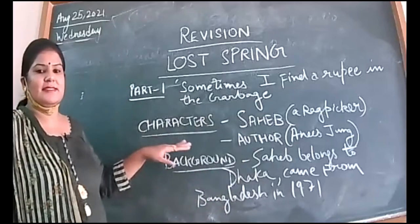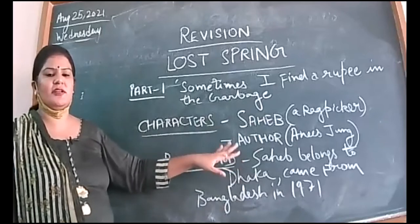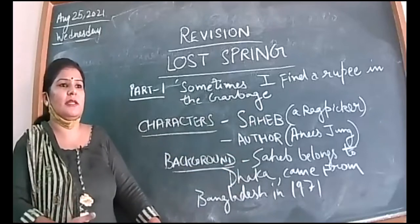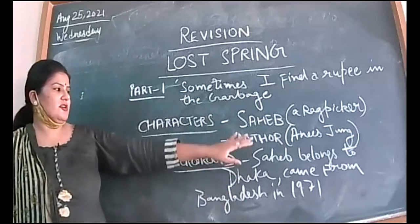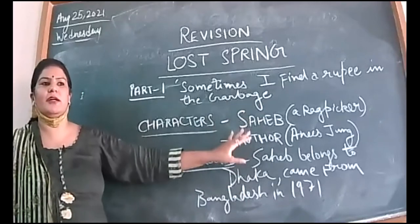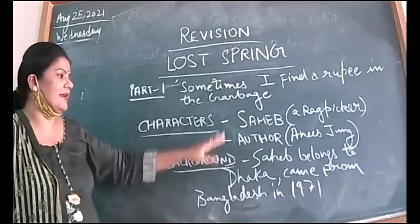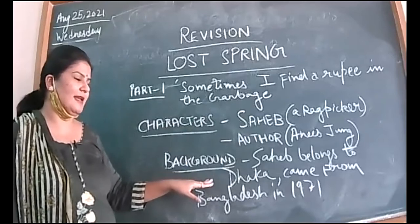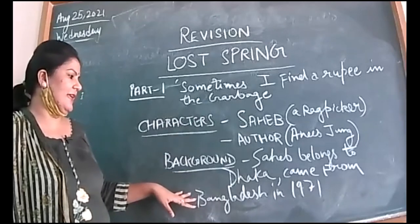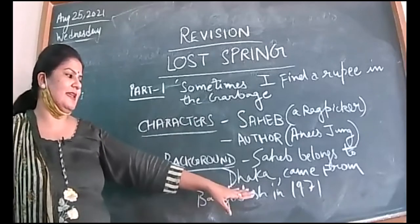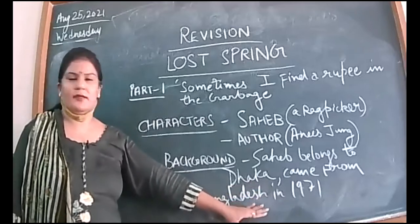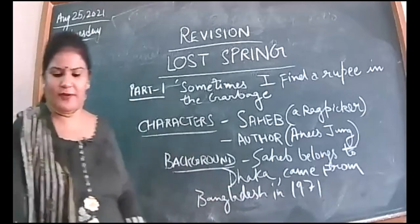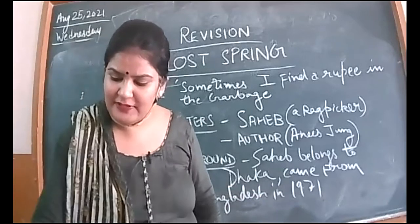Author Anees Jung is also a protagonist in both parts — she interacts with the main characters, and through those interactions we get to know them better. Sahib belongs to Dhaka, Bangladesh, and came from Bangladesh in 1971. That is the background we know about Sahib.